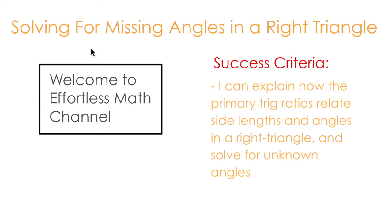To recap: in this video we looked at how to apply the primary trigonometric ratios to solve for missing angles in a right triangle. We used a similar process to solving for unknown side lengths, but introduced the inverse operations — tan inverse, cosine inverse, and sine inverse — for our primary trigonometric ratios to help isolate the unknown angle.